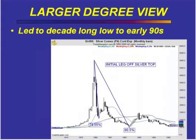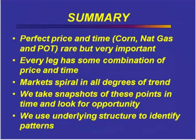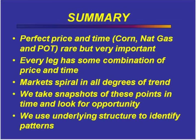Markets are spiraling in all degrees of trend. What I'm doing is taking snapshots of these points in time. The corn, the NatGas, the potash — they're rare, but they're important for you to understand what the best readings look like. If you see them — like if you're trading the e-mini markets and you see a 3.1 drop in 31 bars and all of a sudden you get a morning star pattern — you should jump all over that. That's what you should take from this section.